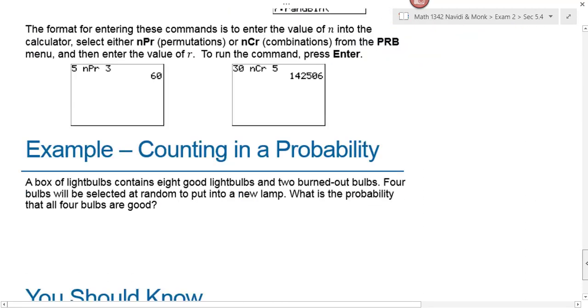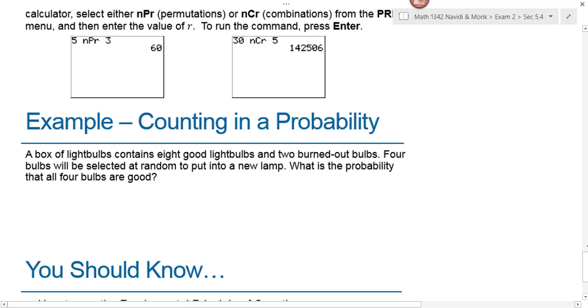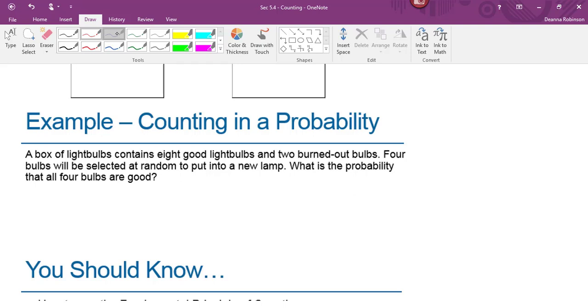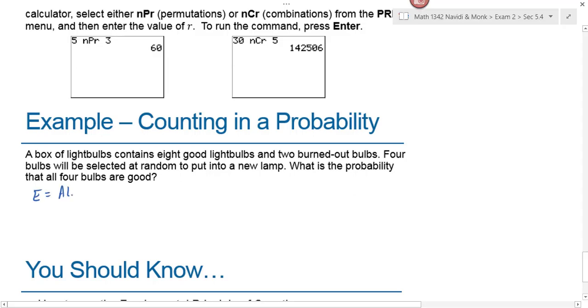Now here's an example problem where counting definitely helps us. A box of light bulbs contains eight good light bulbs and two burned-out light bulbs. Four bulbs will be selected at random to put into a new lamp. What is the probability that all four bulbs are good? So our event here would be all four bulbs good. And you remember me telling you the formula—the probability of an event is the number of ways in which that event can occur divided by the number of elements in your sample space. The number of ways in which I can select all four good bulbs is I could take four out of the—how many good bulbs were there? Eight good bulbs. And does it matter which order I choose them in? No, I just care if I select a good bulb or not. So I can select four out of eight good bulbs.